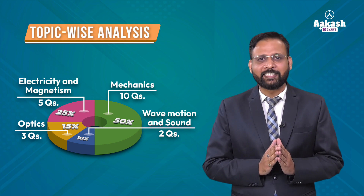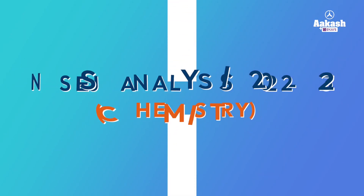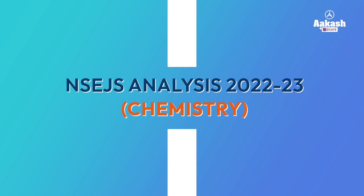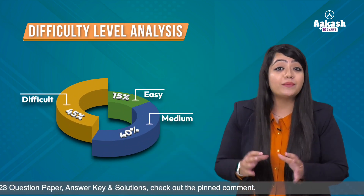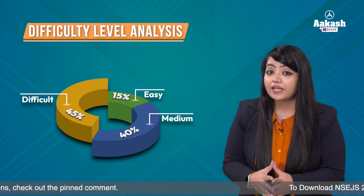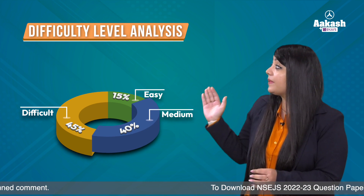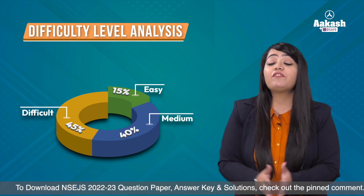That's all for the physics analysis. Let's move on to the chemistry analysis. Looking at the difficulty level of chemistry, almost 45 percent of the chemistry section was on a difficult note, around 40 percent of the questions were of moderate level, and only 15 percent questions were of easy level.